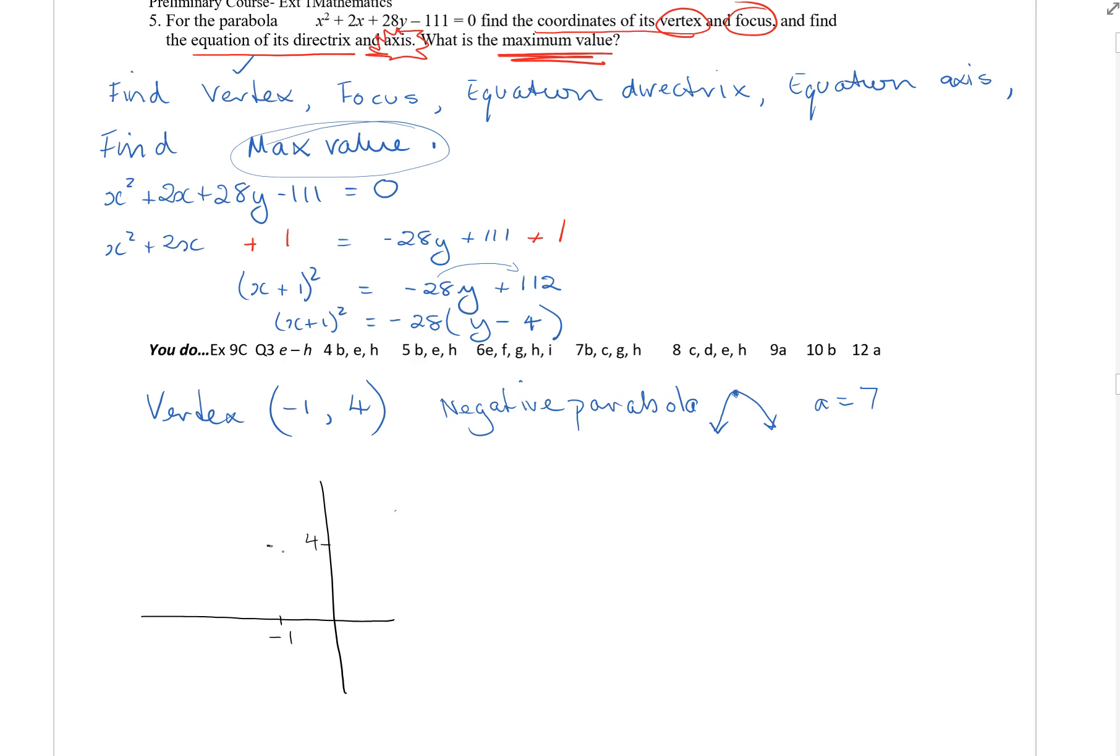So the vertex at negative one and four, this is my vertex. And I know that it's upside down so I can draw it in. From there I know the focal length is 7, so I need to move 7 units in this direction.